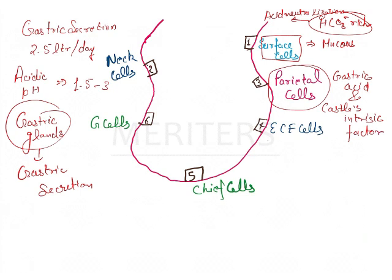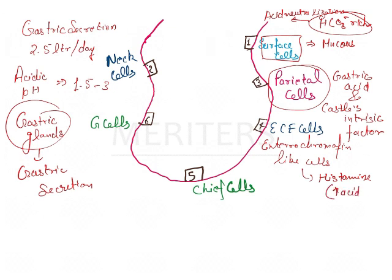Then we have another important cell type known as the enterochromaffin-like cells (ECL cells). These cells are the source of histamine, and histamine is responsible for increasing acid secretion.